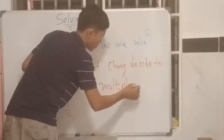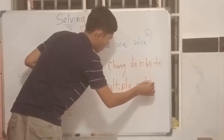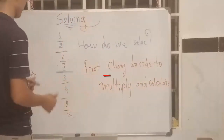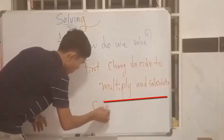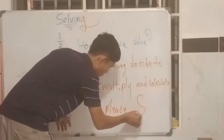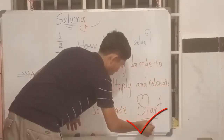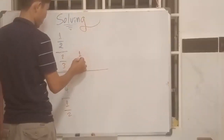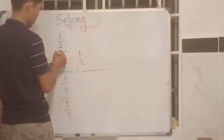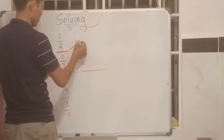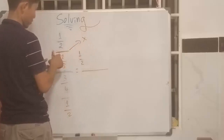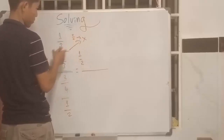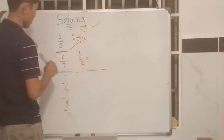First, we change the divide sign to a multiply sign, okay? Because we don't just keep this divide, so we change to multiply and calculate. Start altogether please. The first: we change divide by to multiply, and the middle divide by we keep. We change only here — to multiply. One divide by two, multiply.